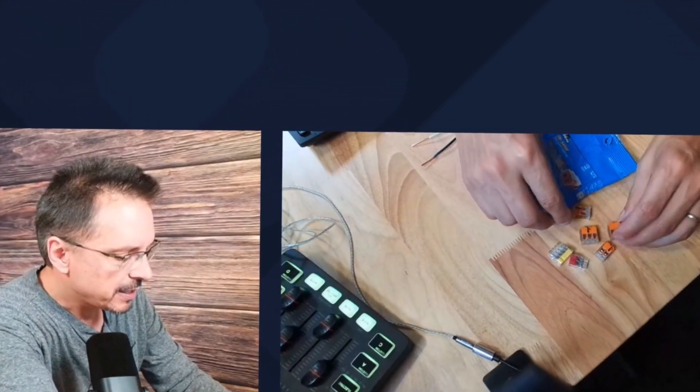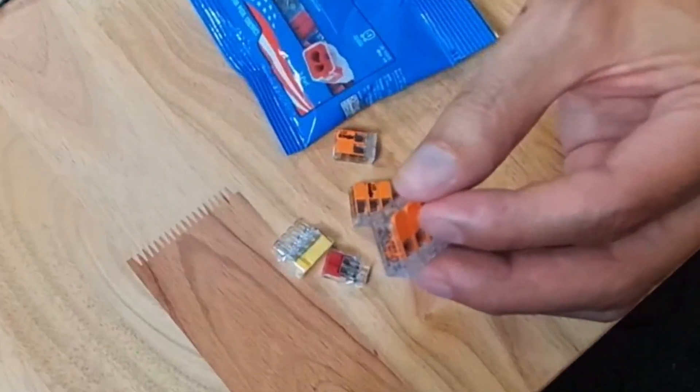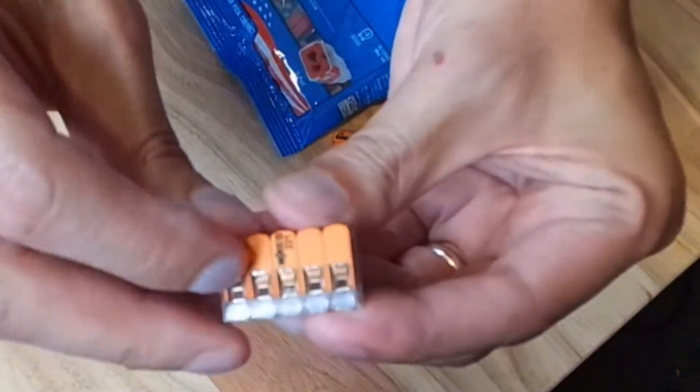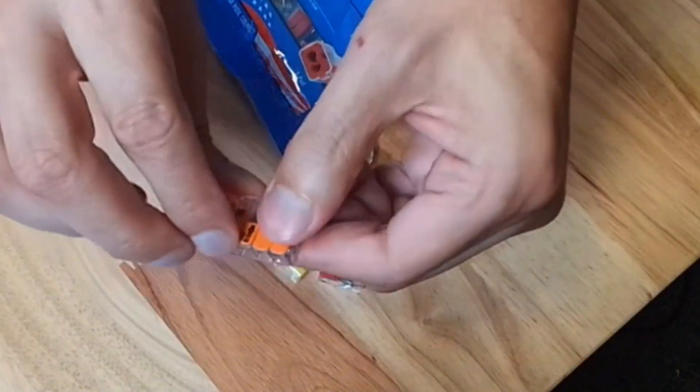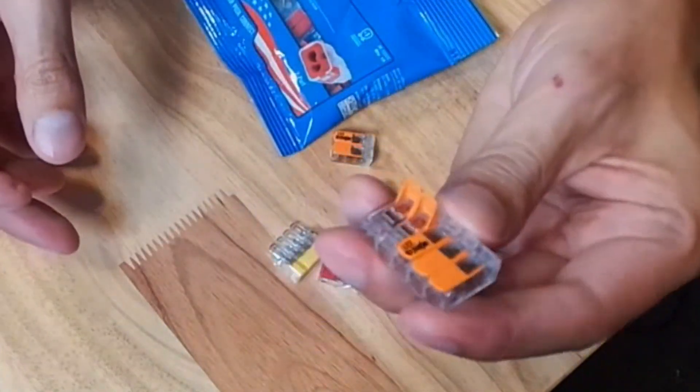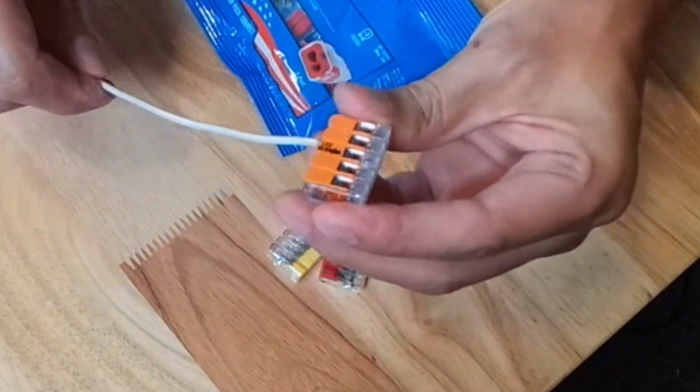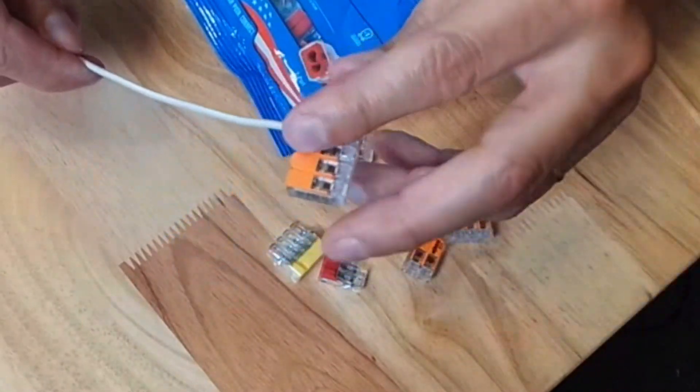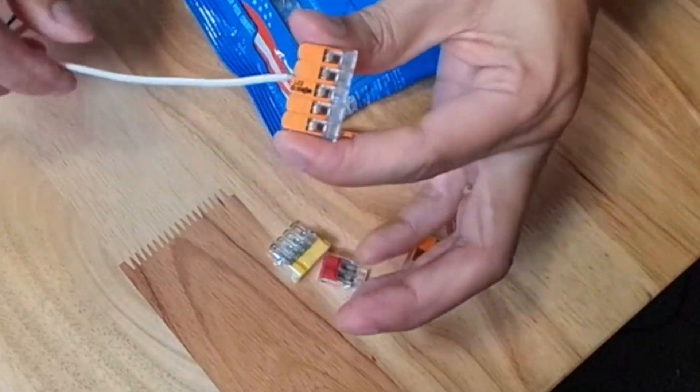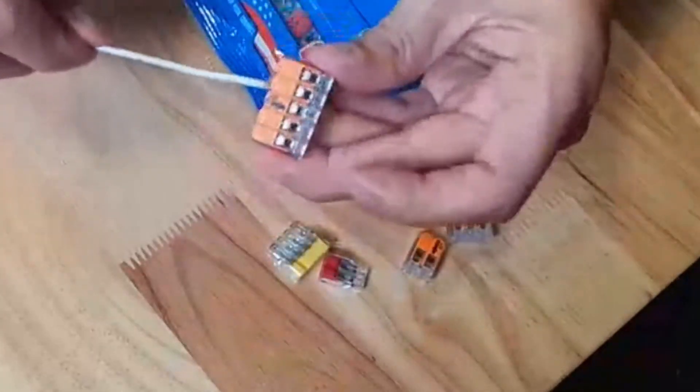The Wago connectors have these really cool locking levers that literally just lift right up. You put your electrical wire right inside and lock it down shut. They come in two, three, and five configurations, so you can lock up to five electrical wires together. It's a very tight, solid connection. It's heavy duty and feels good in hand.